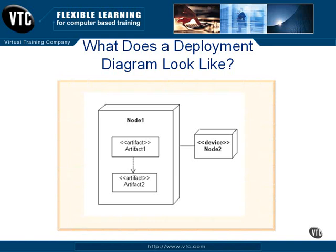A node is represented by a three-dimensional box, and a node is a physical entity — very often hardware — that can execute artifacts. An artifact, represented by a rectangular classifier box, is a physical file, such as an executable, library, or source file, that the system's components use or execute. In other words, they're pieces of information related to a system's software.